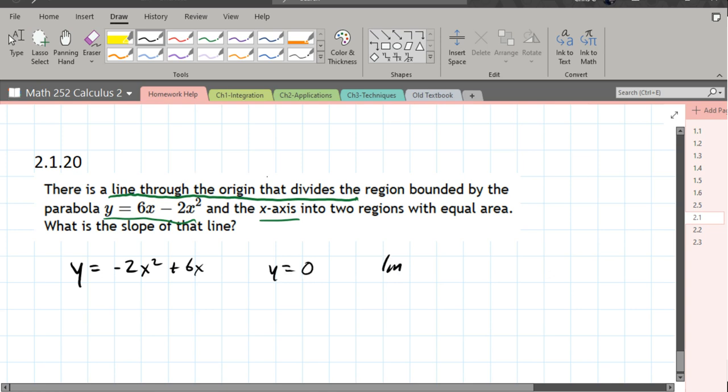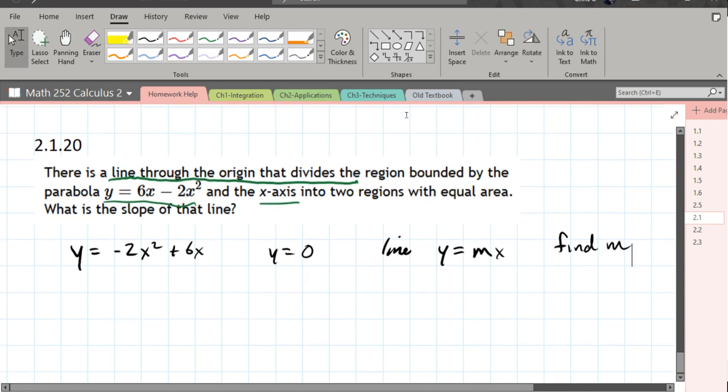We also have the line. What's a line through the origin look like? The origin means it has a y-intercept of zero. So why don't we just go with y equals mx? We do not know the slope of this line. That's what we're trying to find out. So we're gonna find m.